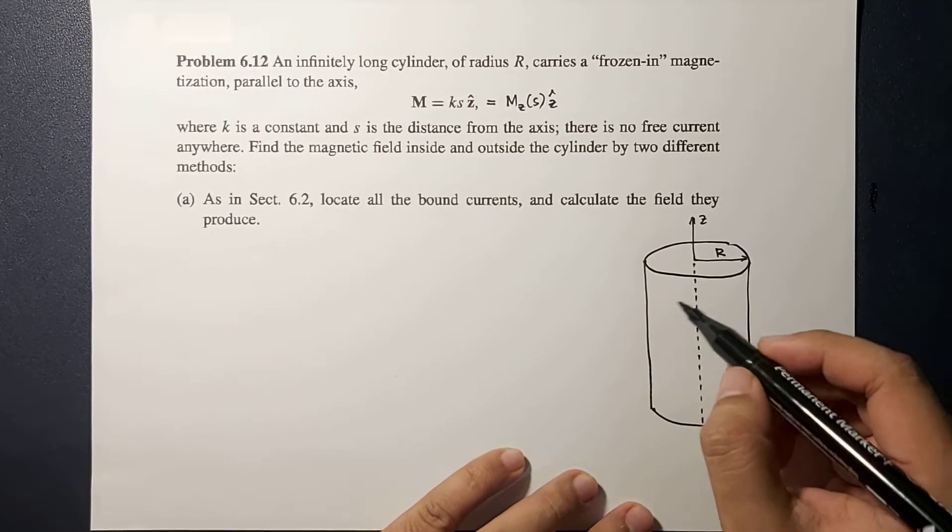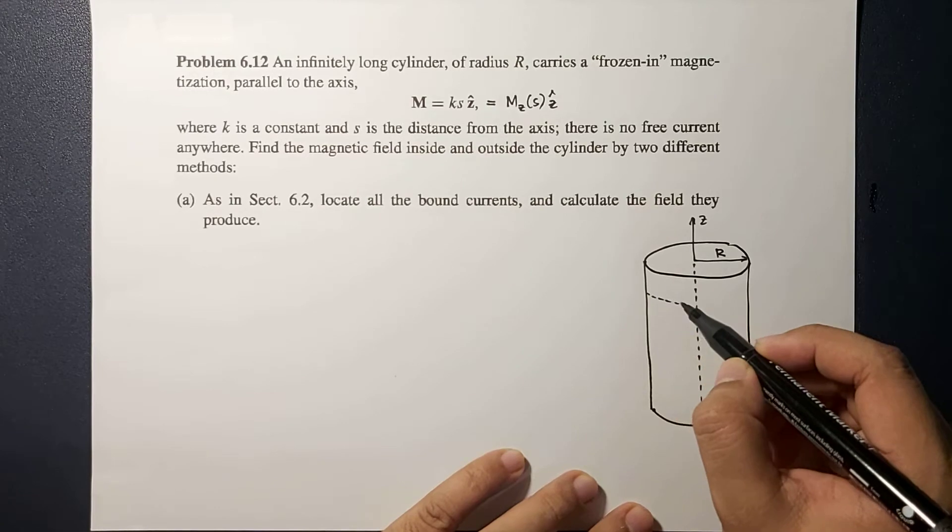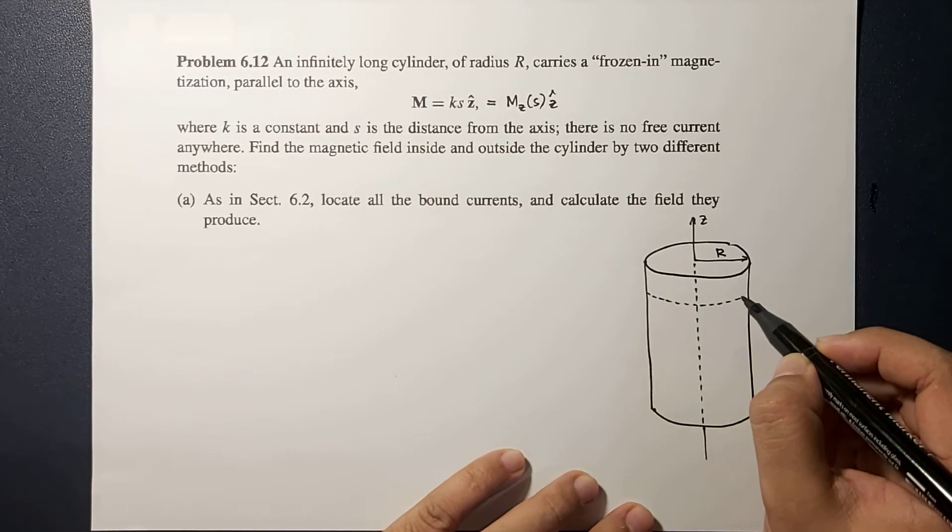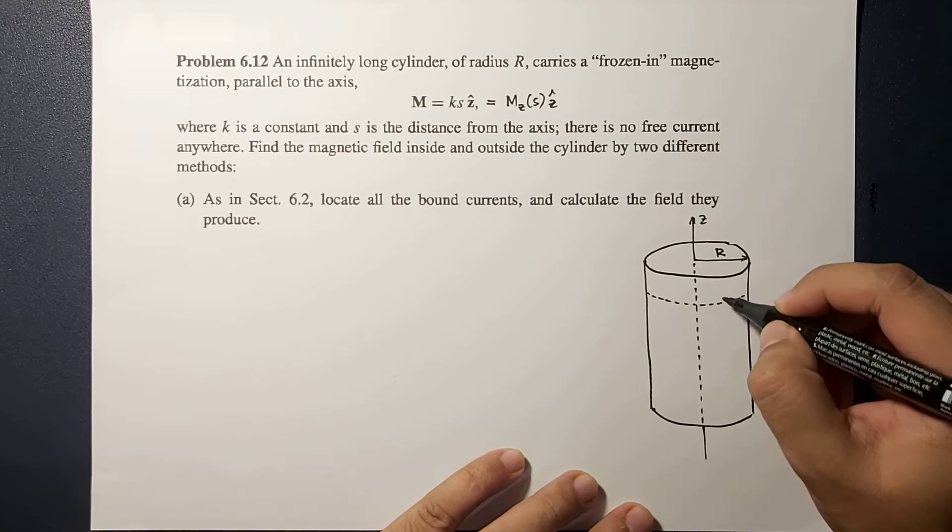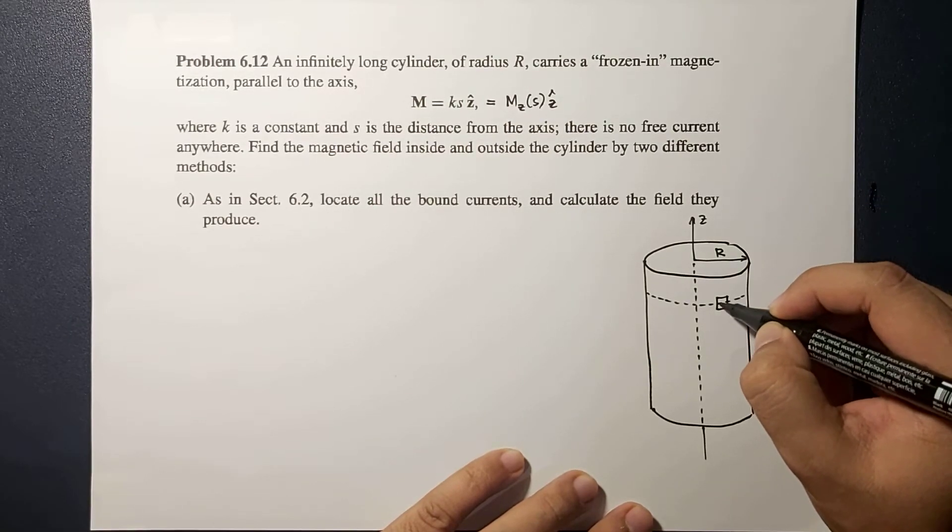So if you're going to consider the unit vectors in cylindrical coordinate system, let's look at this side of the cylinder.